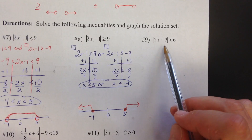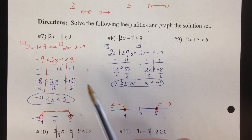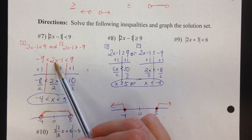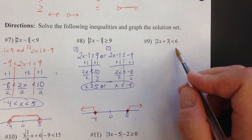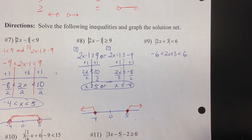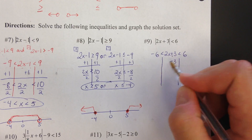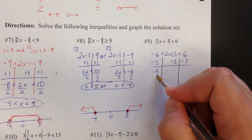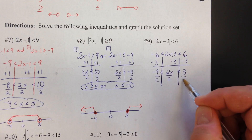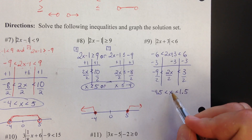Let's take a look at number nine: absolute value of 2x plus three is less than six. This is going to be an and problem. Going back to number seven, you can set it up as two inequalities, or we can make this one compound inequality and put all the pieces together. The lower value will be negative six: negative six less than 2x plus three less than positive six. That's an and problem. Subtracting three from all parts, we get negative nine less than 2x less than three. Dividing by two: negative 4.5 less than x less than 1.5. Notice that x is between.